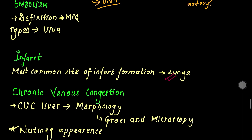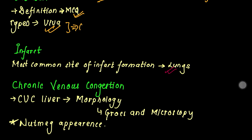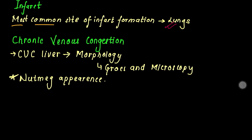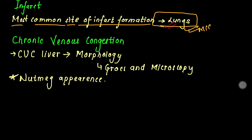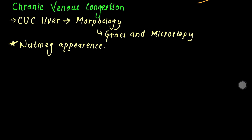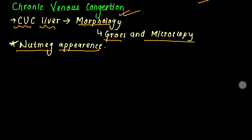Key concepts include embolism and the definitions of thrombus. The most common site of infarct formation is a key MCQ topic. Also included is chronic venous congestion, which mainly involves the liver — the CBC liver. This covers its morphology both gross and microscopic.